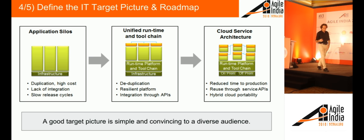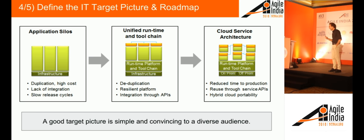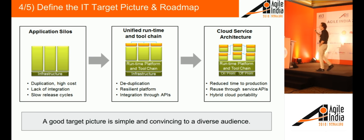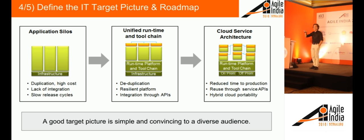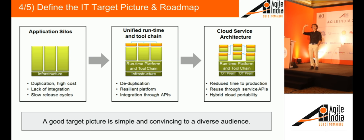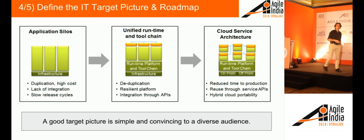I was at a conference in Australia where somebody said very nicely: management are suckers for plans. They love a plan. As an architect we always like to show the target picture, and often to management that's confusing — it's like Docker, Kubernetes, whatever. But management loves a roadmap: first you do this, then you do this, then you do this. Make it nice and easy. So what does one of these roadmaps look like?